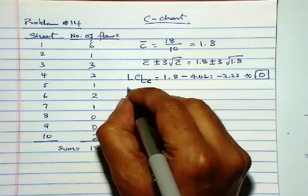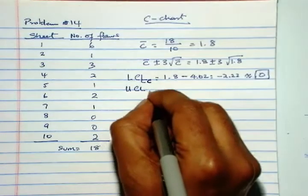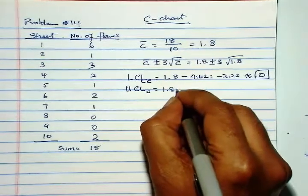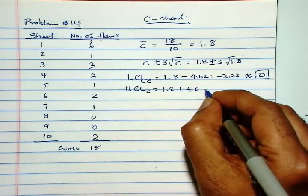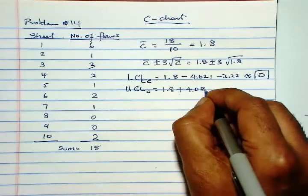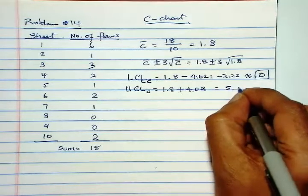And then upper control limit for c is 1.8 plus 4.02, and that is equal to 5.82.